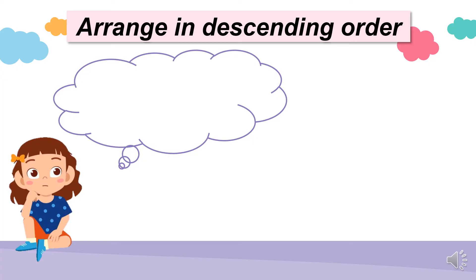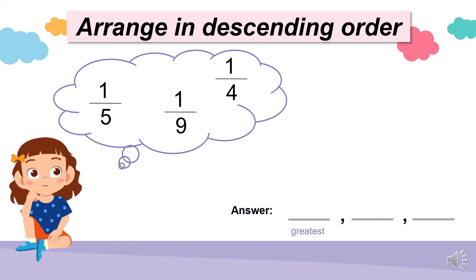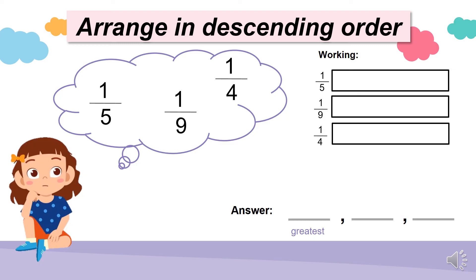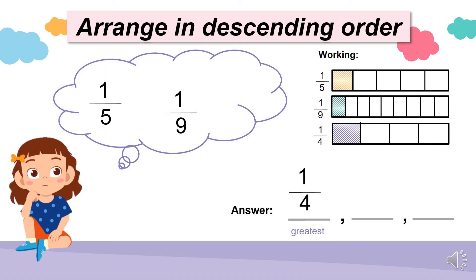Arrange the fractions in descending order. Look at the denominators — are they the same number or not? Which method should you use? Now let's discuss the answer. Descending means you begin with the greatest fraction. Because the denominators are not the same, you need to draw fraction strips. Draw 3 fraction strips of the same length. 1 over 5 means it is divided into 5 equal parts and only 1 part is shaded. 1 over 9 means it is divided into 9 equal parts and only 1 is shaded. 1 over 4 means the fraction strip is divided into 4 equal parts and only 1 part is shaded. So the greatest fraction is 1 over 4, next is 1 over 5, and the smallest fraction is 1 over 9.